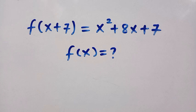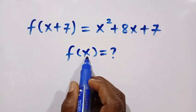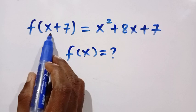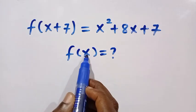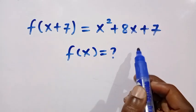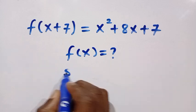We have f(x+7) = x² + 8x + 7, and we want to reduce this function to only f(x). So f(x+7) is always greater than f(x) based on the output. Now let's see how we can solve this.